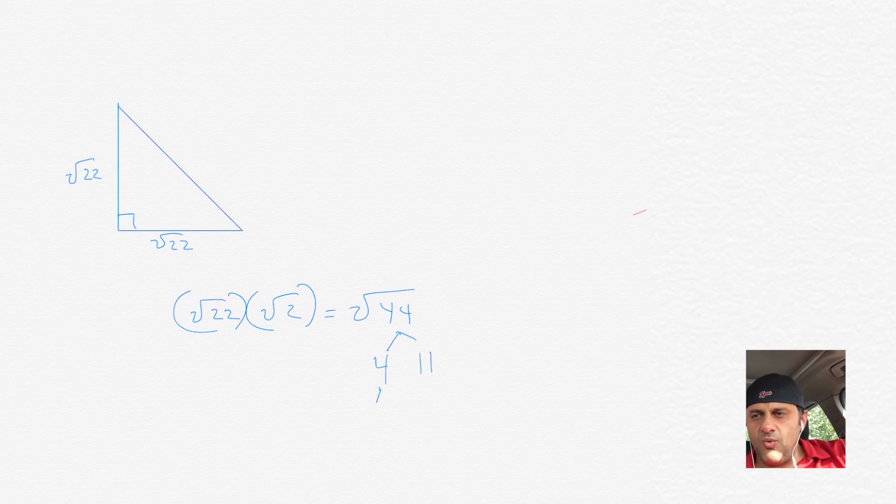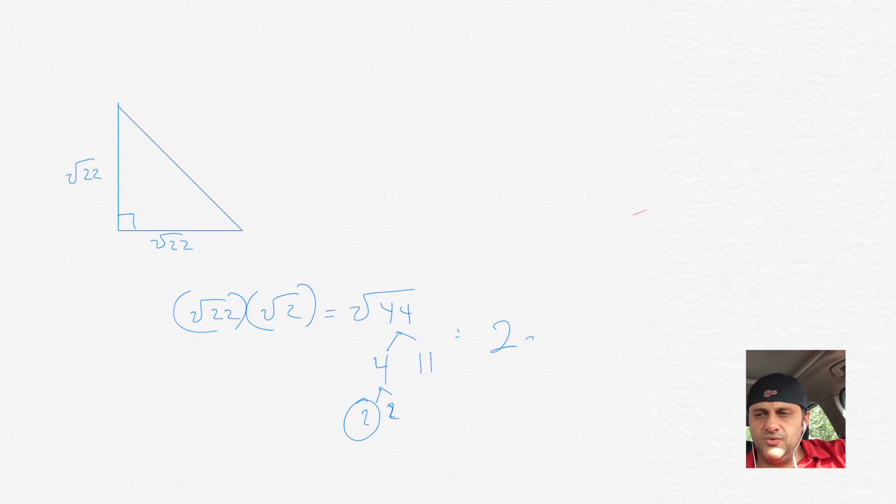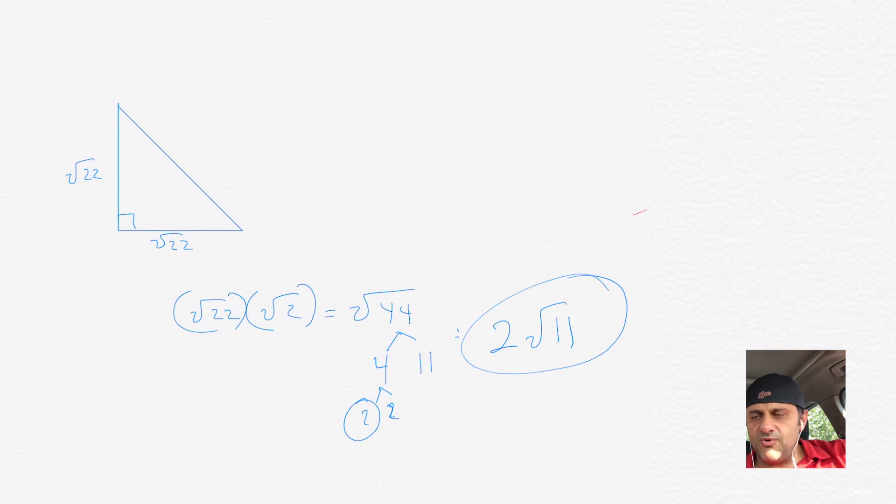Let's see if we can simplify that. 44, we have 4 times 11. And then whenever you see the 4, as you know, that's 2 times 2. So that's a pair of 2s. The 2 would come out. The 11 won't. That's a prime number. So the simplified version of the square root of 44 is 2 times the square root of 11.